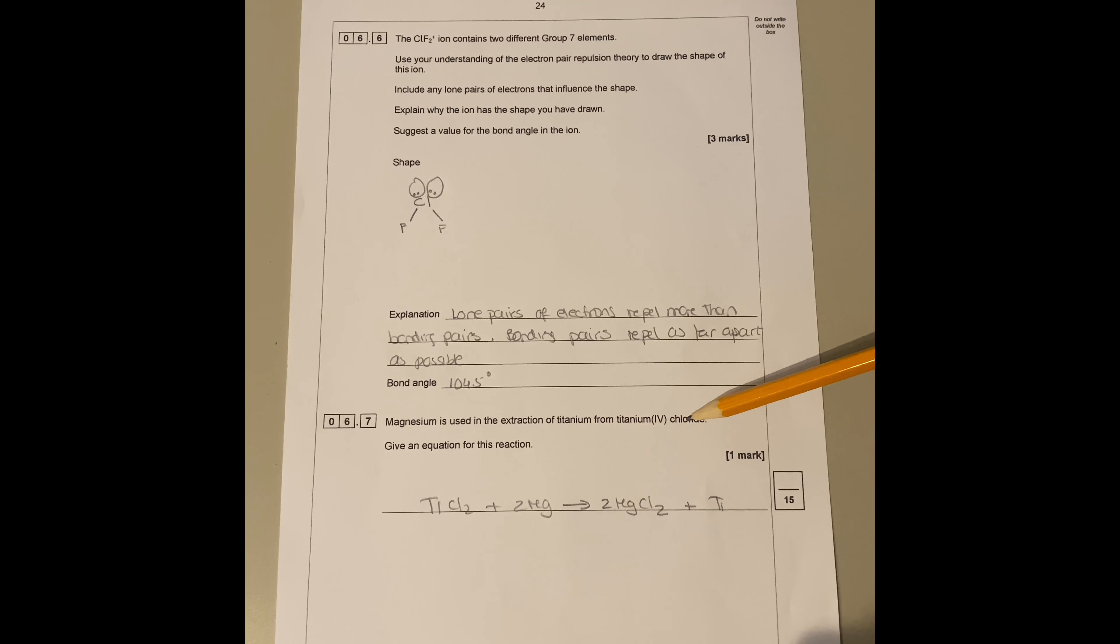Question 6.7: Magnesium is used in extraction of titanium from titanium tetrachloride. Give an equation for this reaction. You have to know this, you got titanium chloride four and then you got titanium formed there. So you got titanium chloride plus magnesium gives you magnesium chloride plus titanium. You have to know this equation, it comes quite a lot often in the exam papers.